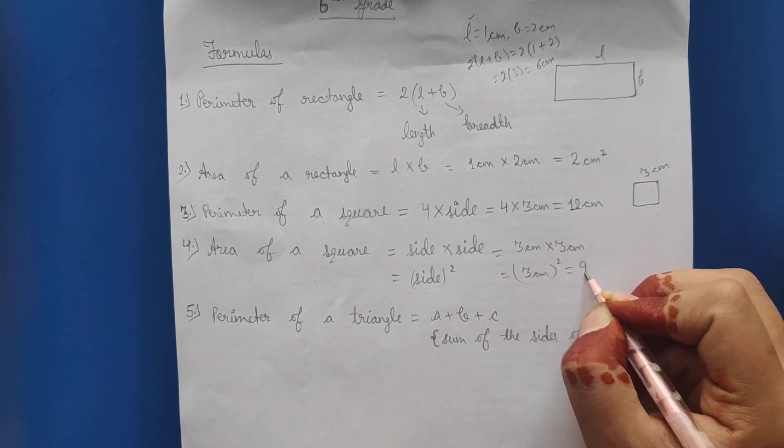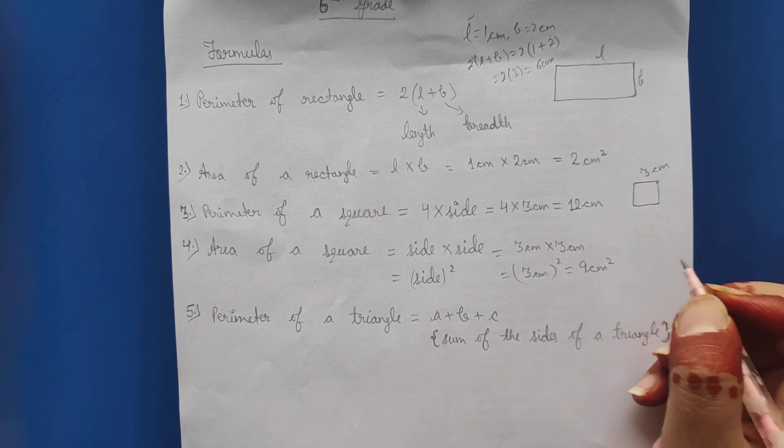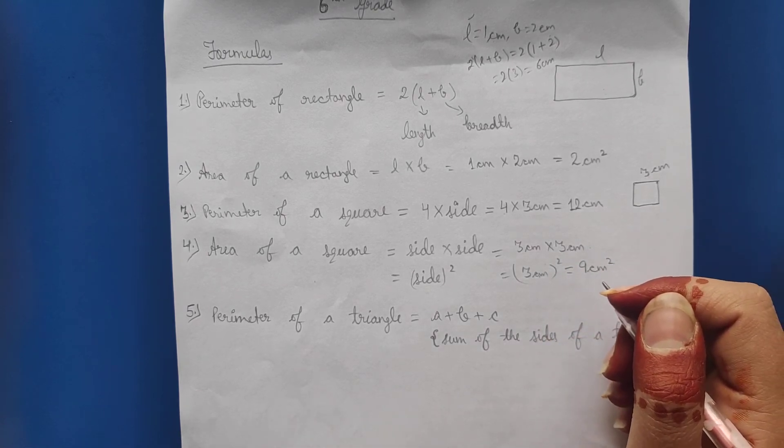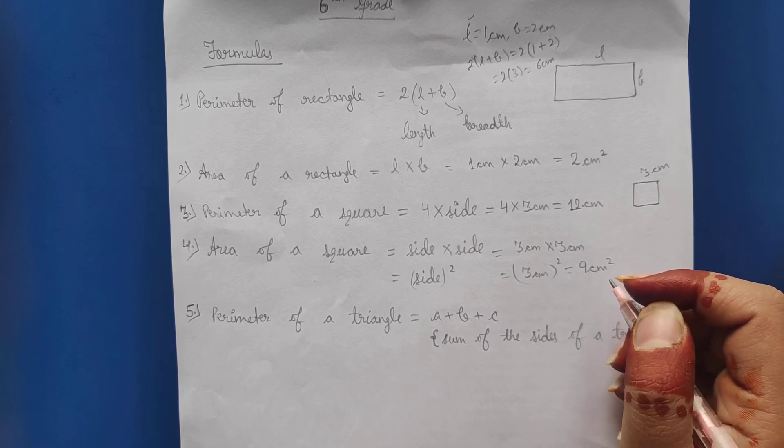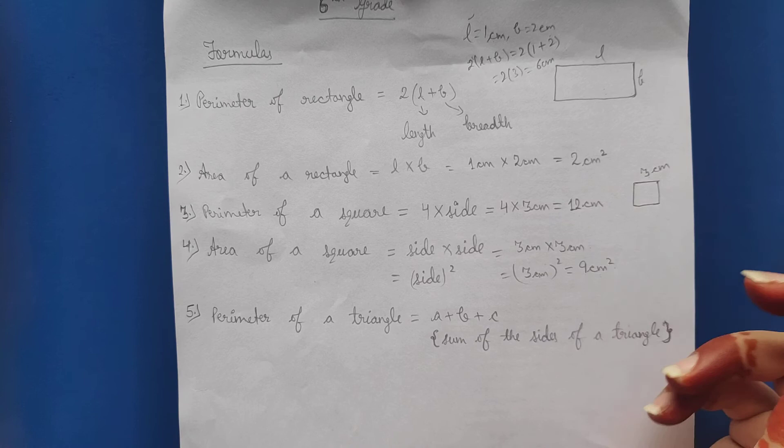So 3 times 3 is 9 centimeter square. So the area of square with side 3 centimeter is 9 centimeter square. Clear?